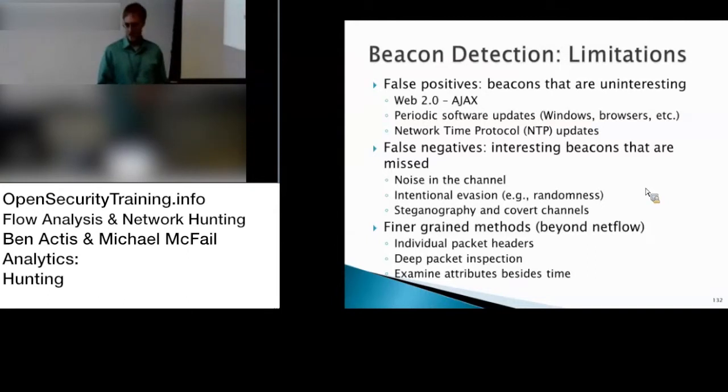There are also ways you can get around beaconing. If you initially randomize your phoning home such that it's not happening in a regular interval, it's not going to look like beaconing. If you've got something looking for that regularity, it's not going to find it. And then you've got steganography and covert channels. If you're embedding your information inside other traffic or making it look like something else, that's one way to get around this beacon detector.